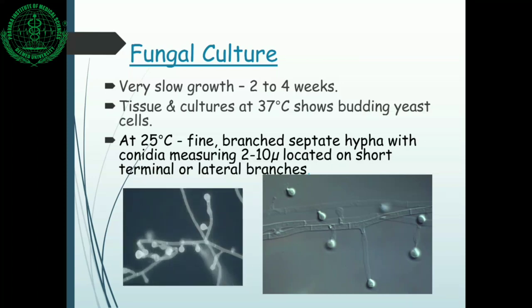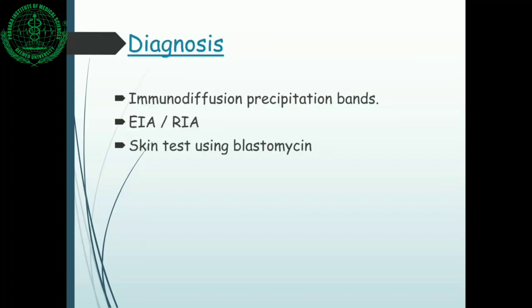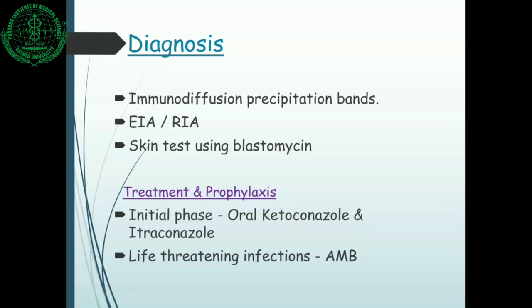Immunodiagnosis techniques can also be used, including immunodiffusion and immunoassays such as EIA or radioimmunoassay. Skin testing can be done using blastomycin antigen. Treatment for blastomycosis uses azole agents such as ketoconazole or itraconazole, and in severe disseminated infections, amphotericin B is used.